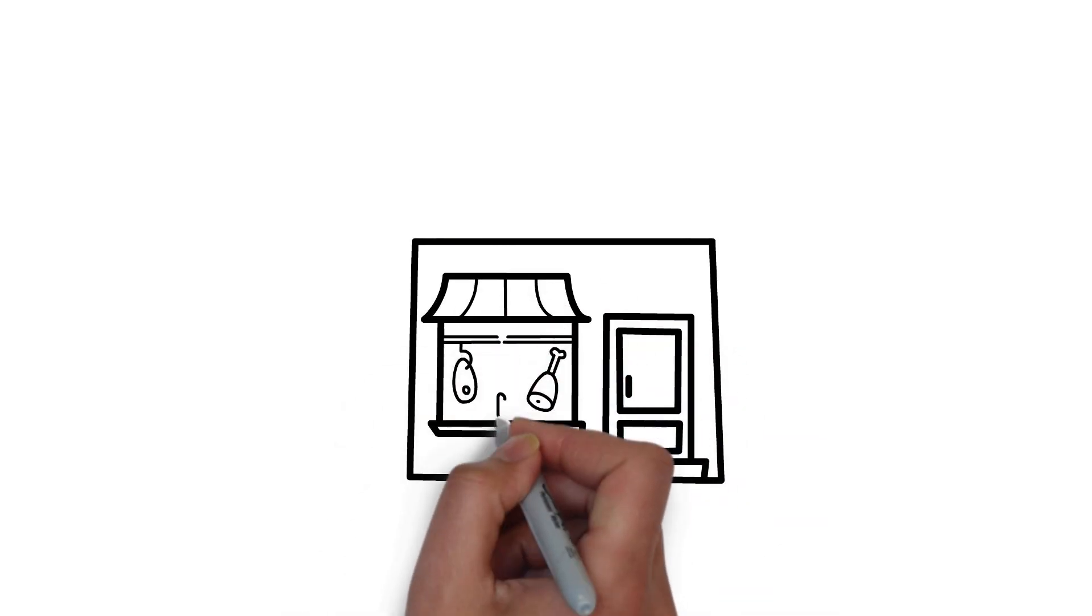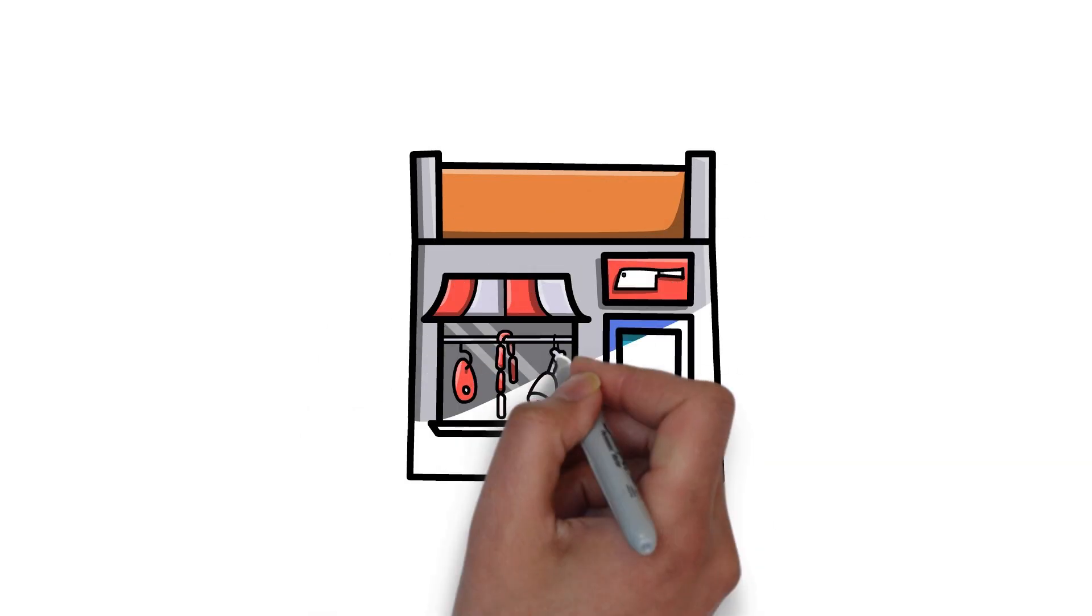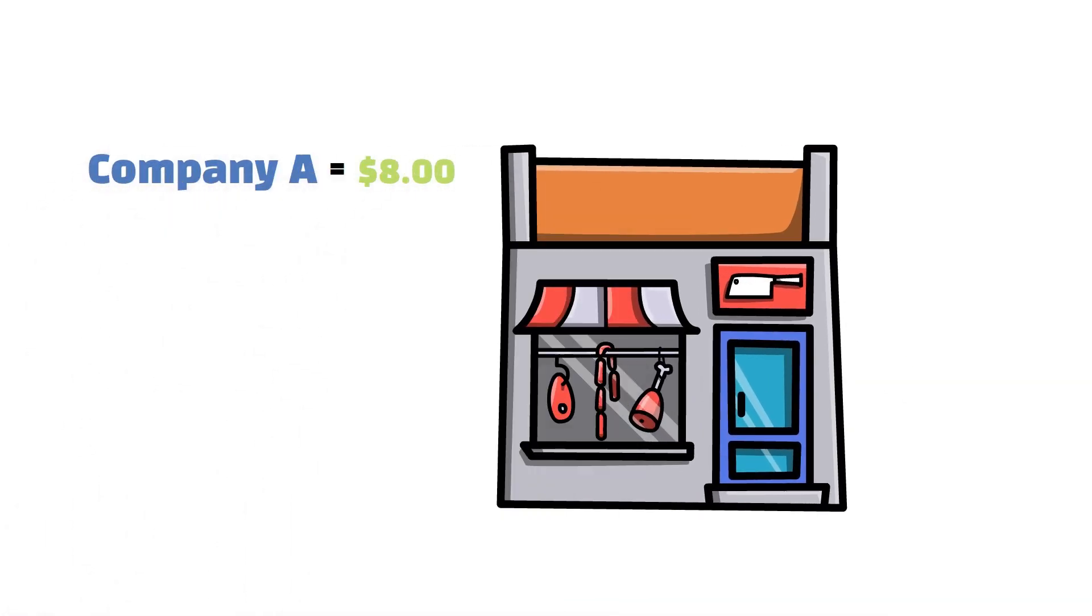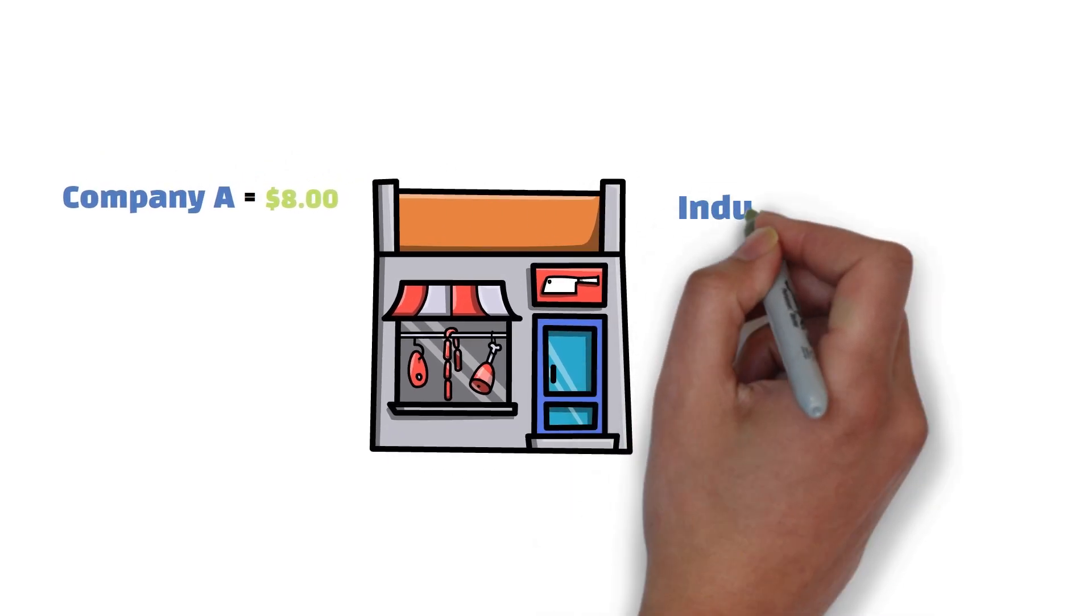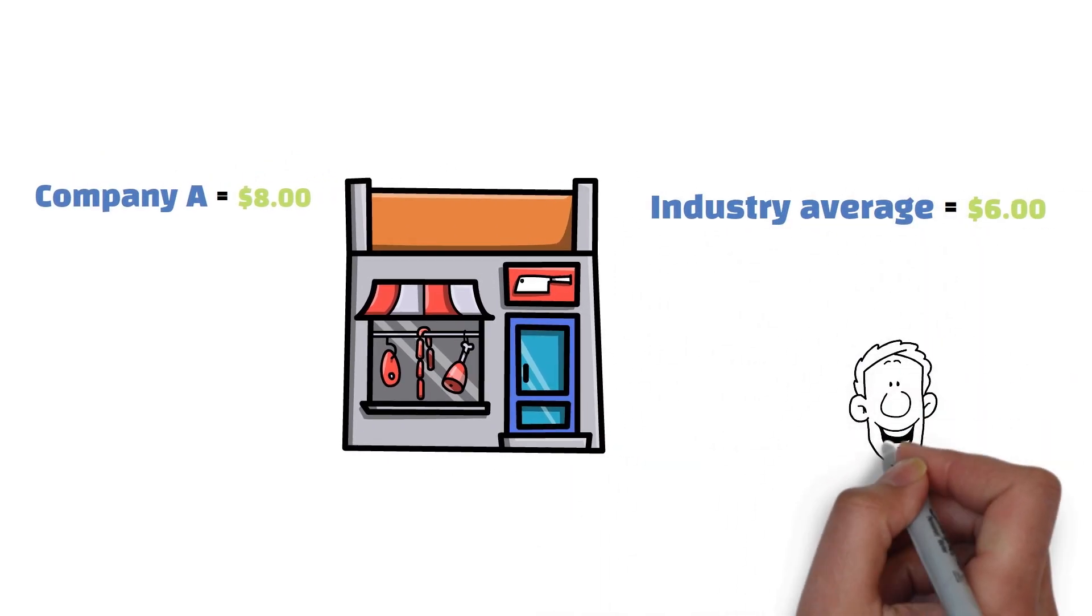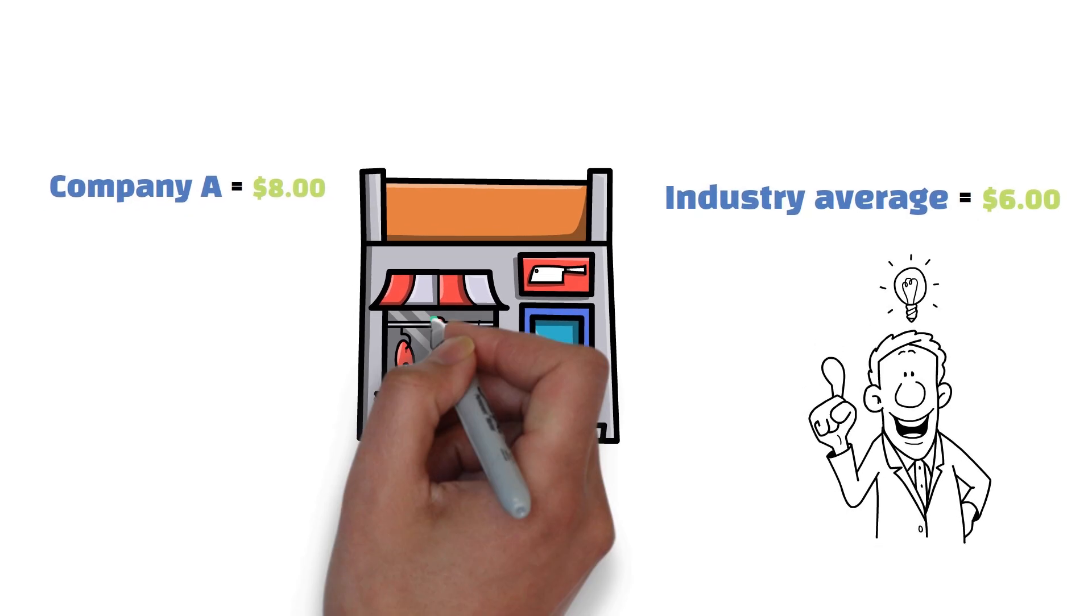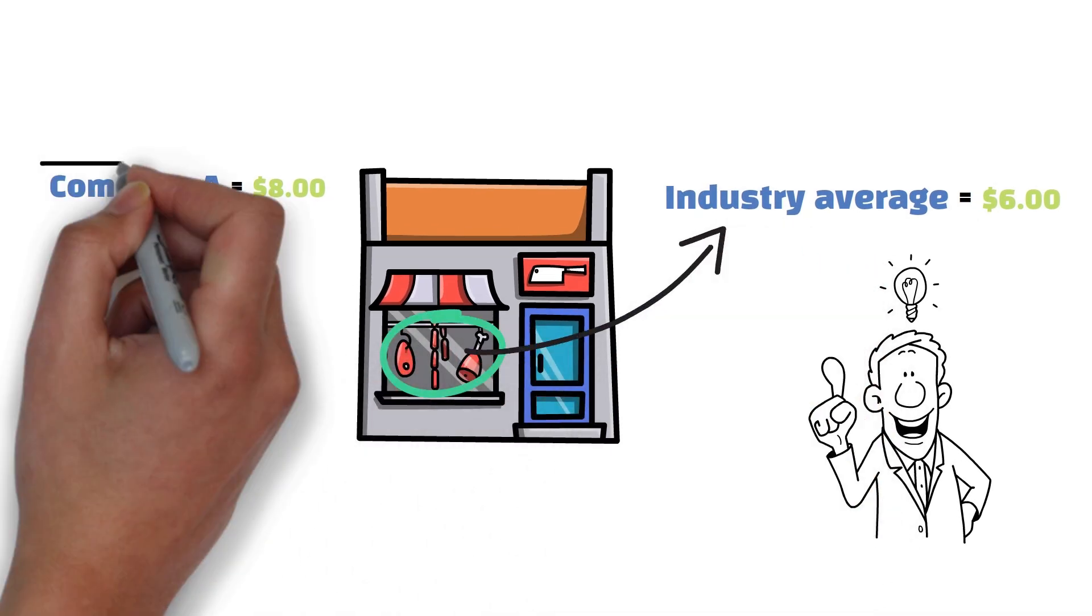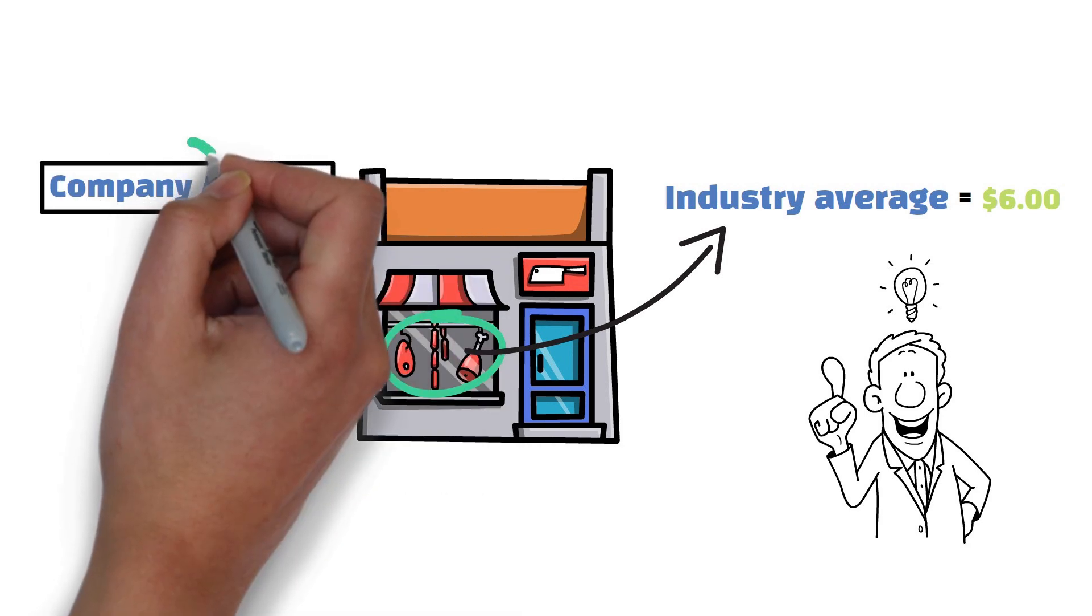Let's go back to that butcher shop. A piece of beef from company A costing $8 per pound alone doesn't mean anything significant. However, if we know the industry group average of beef is $6 per pound, it adds more context and helps us see the bigger picture. If you know that beef from other brands is selling for an average of $6 per pound, you get a better sense of whether that $8 per pound price tag is justified.